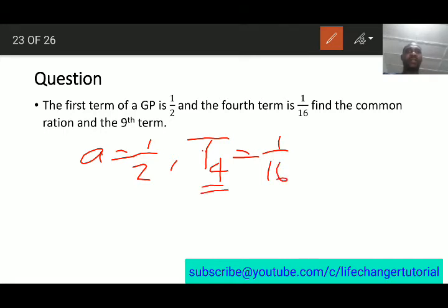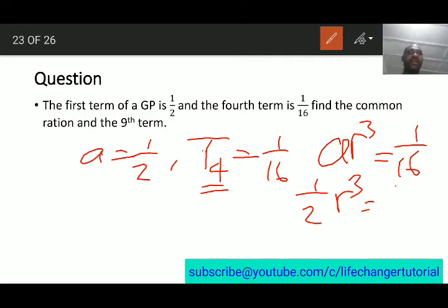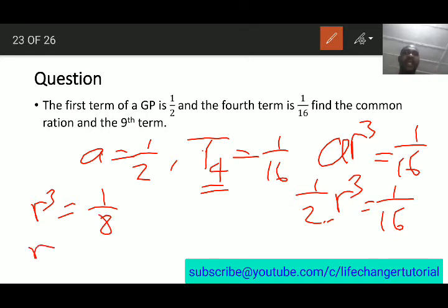Now, but you should know that 4th term, if we substitute into the formula, it will be ar^3. That means ar^(n-1). So, 4 minus 1 is 3, equal to 1 over 16. I can substitute the value of a here, which is half. So, we have half r^3 equal to 1 over 16. Now, if I divide both sides by half, or I say cross multiply these two, I'm going to get r^3 to be equal to 1 over 8. And then, that means r will be cube root of 1 over 8, which is 1 over 2. So, the common ratio, we've answered that, is 1 over 2.